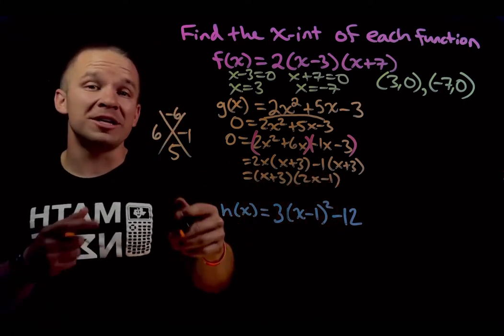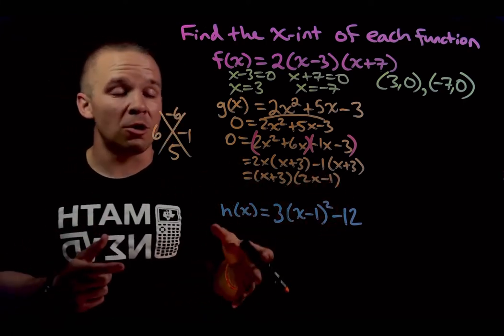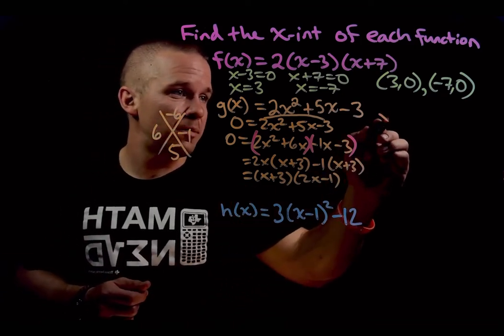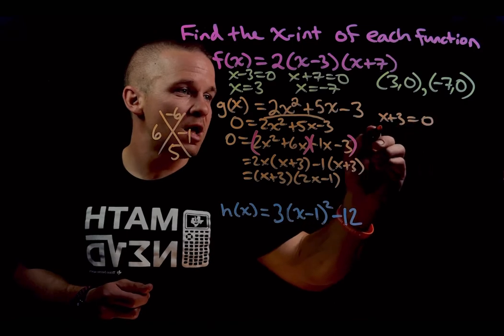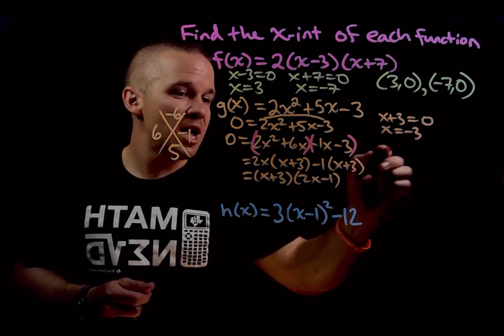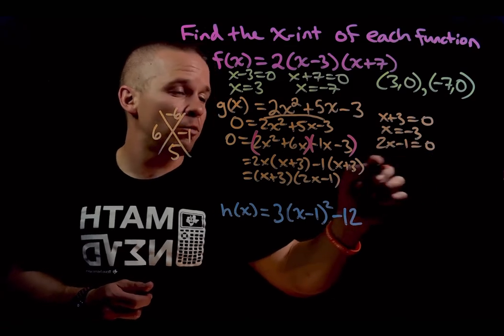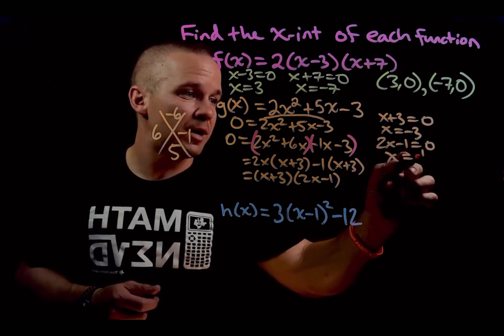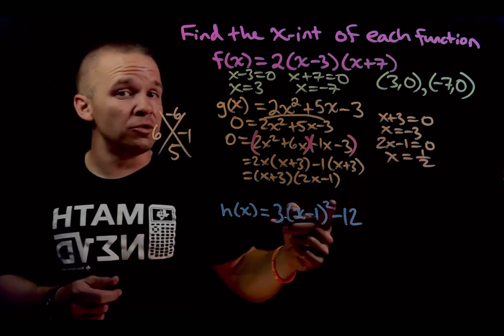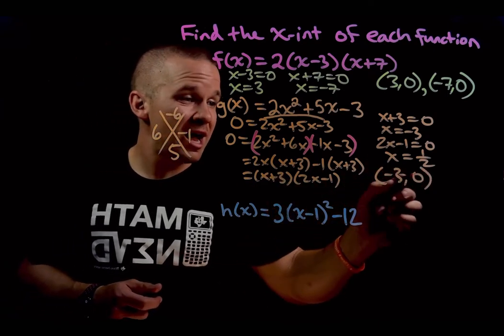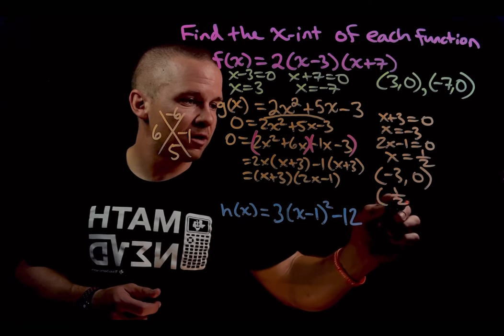Now I can take each one of these factors, set them equal to zero and solve for x. So I'll have x plus three equals zero. Let's come back up here. X plus three equals zero, I'll get x equals negative three. And I'll do the two x minus one equals zero. Add one, divide by two, I get x equals positive one half. So my two x-intercepts are going to be negative three comma zero and I'll have one half comma zero.